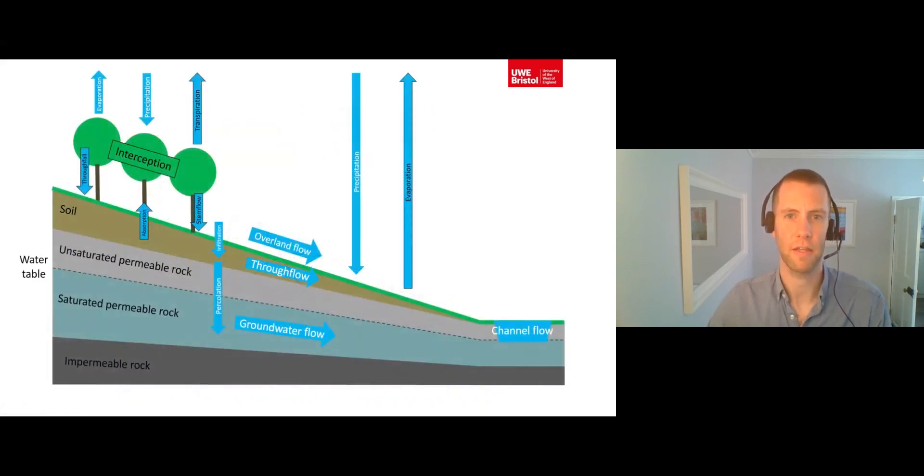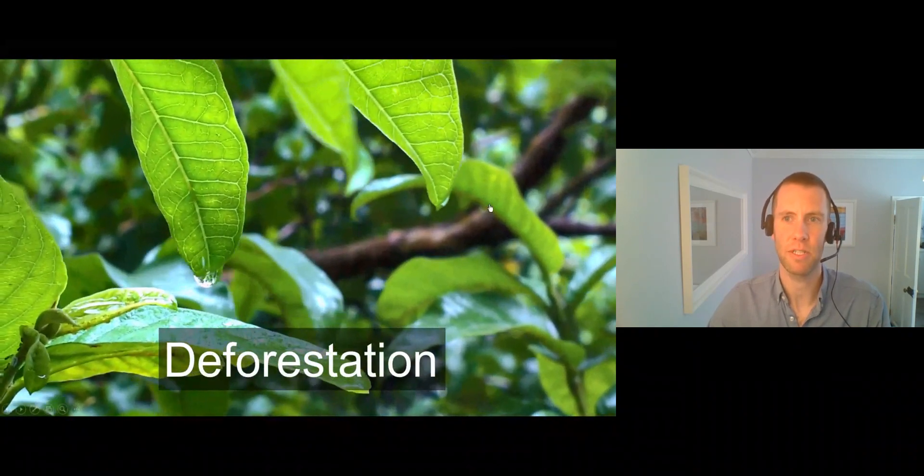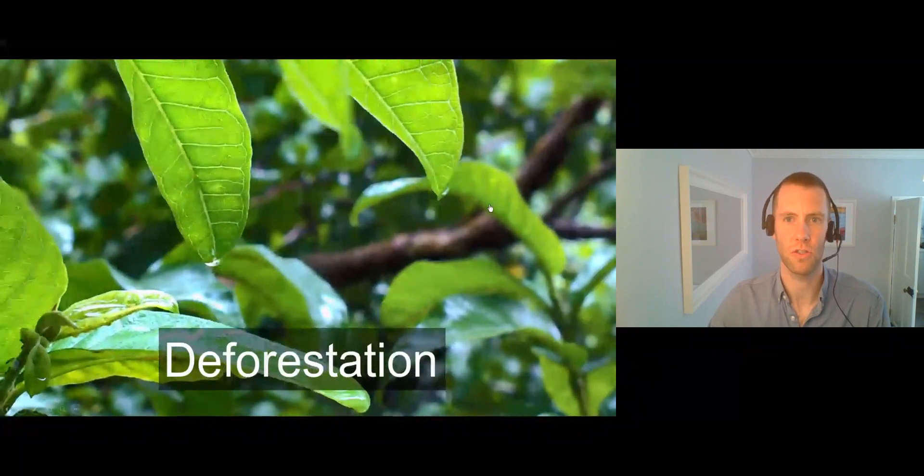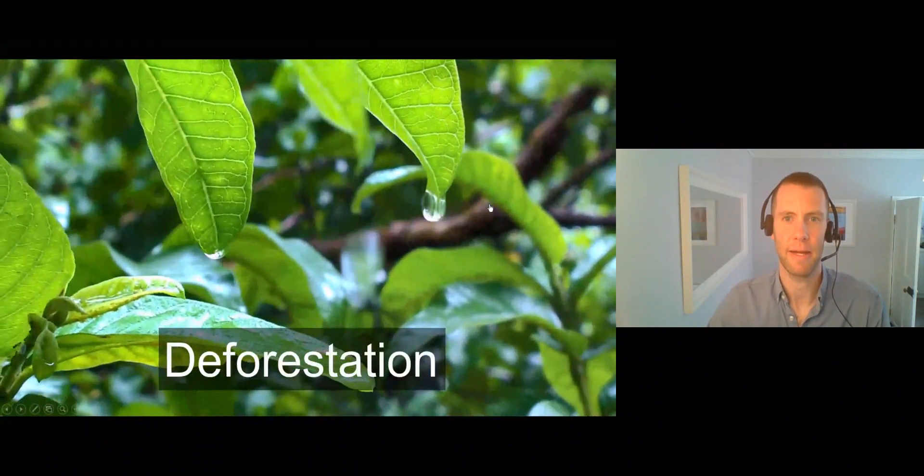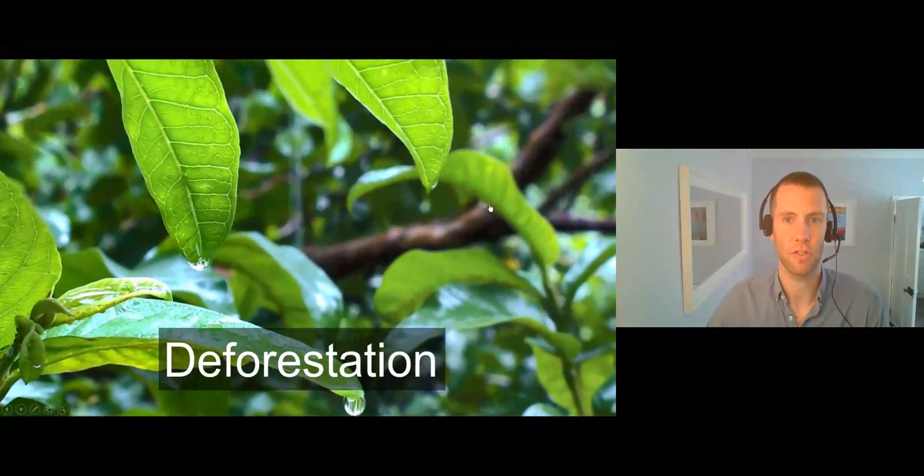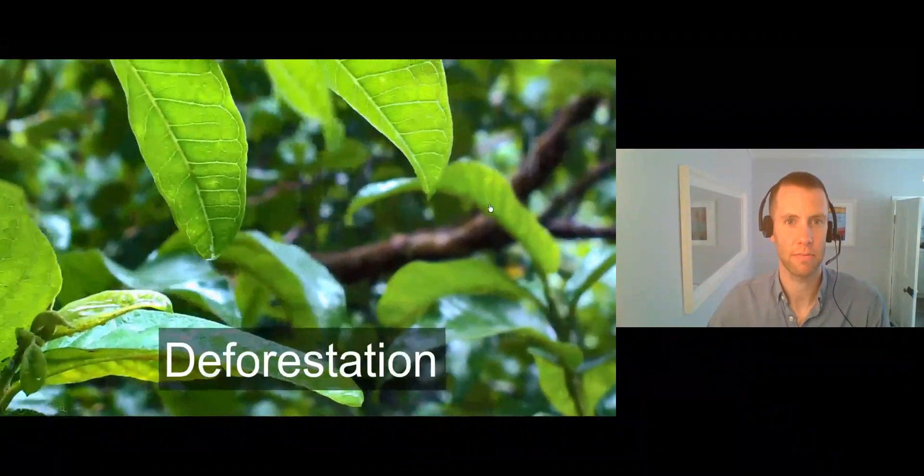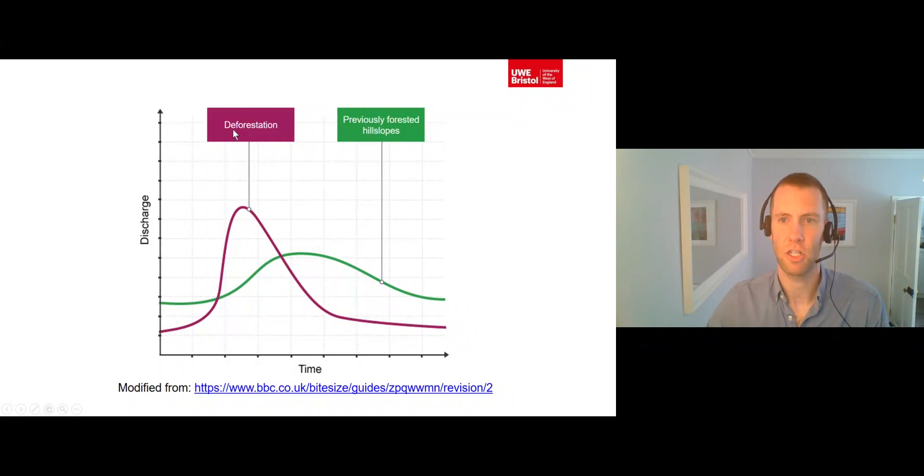Now, let's move on to how humans can affect the processes of interception, transpiration and evaporation. Firstly, deforestation. The artificial removal of vegetation results in less precipitation being intercepted, speeding up the movement of water onto hill slopes, and therefore into river channels. In addition, less vegetation means that less intercepted water is turned into water vapour via evaporation, and less of the water in the soil is converted into water vapour via transpiration. Both the reduction in interception and the reduction in transpiration means that drainage basins with deforestation have higher levels of storm flow, resulting in a flashier drainage basin.